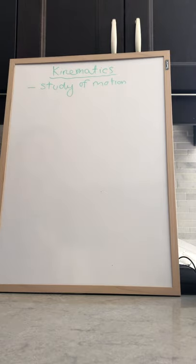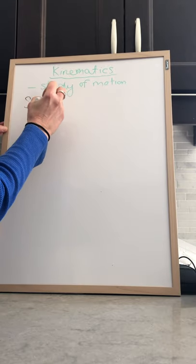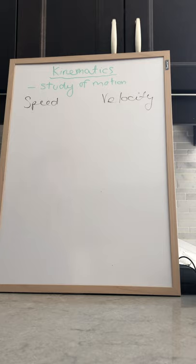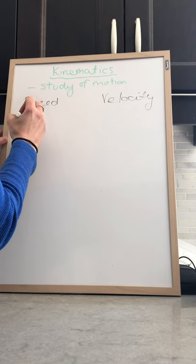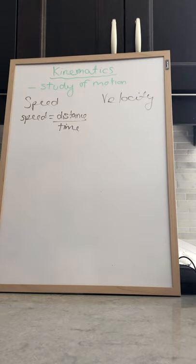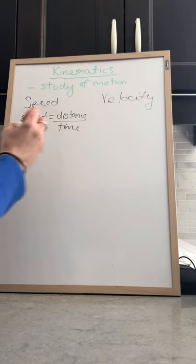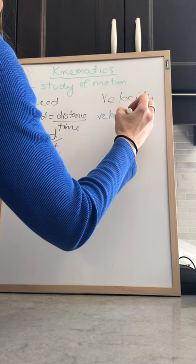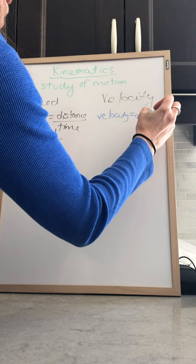When we're talking about motion, we often hear the terms speed and velocity. People often think speed and velocity are the same thing — they are not. They can have the same number, but they are not the same thing. Speed is equal to distance divided by time. The symbols we use are: speed is v, distance is d, and time is t. Velocity is equal to displacement divided by time.